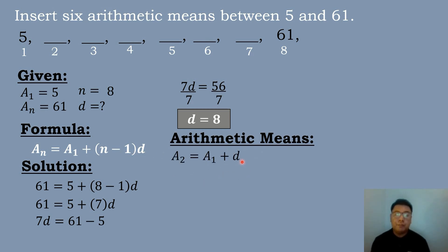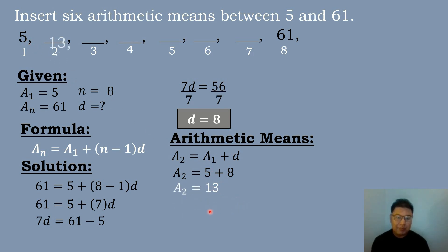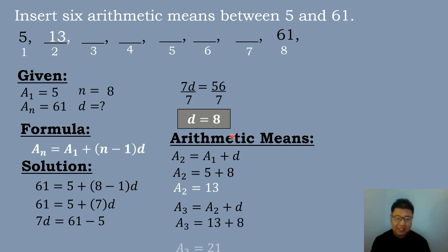Then to compute the arithmetic means, we will add the first term and the common difference to get the second term. So 5 plus 8 equals 13. The second term is 13. Then we repeat the process: add the second term plus the common difference. So 13 plus 8 equals 21.